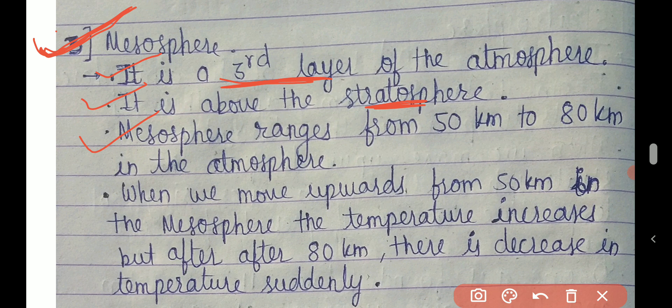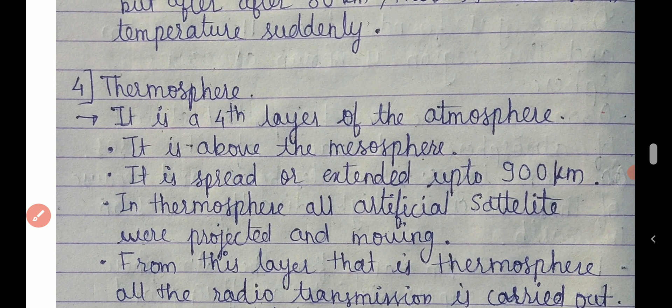If we move upward from 50 kilometers in the mesosphere, the temperature increases. But after 80 kilometers there is a sudden decrease in temperature. So temperature increases with height up to 80 km, then decreases suddenly.